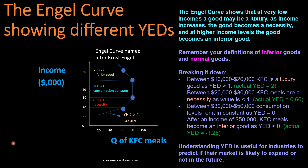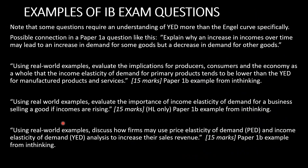Hopefully you now understand why the shape of the Engel curve is like that, and how you can use the YED values to identify why the shape shows it moving from a luxury good into an inferior good. Let's finish with some examples of IB exam questions.